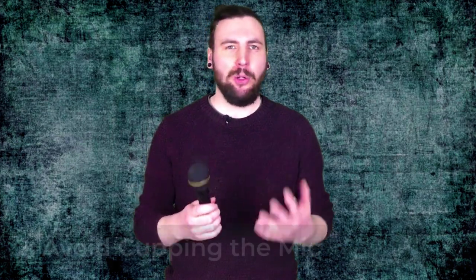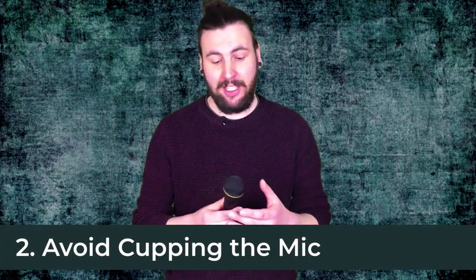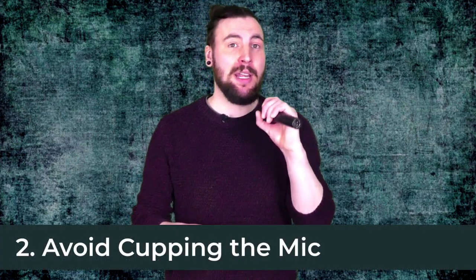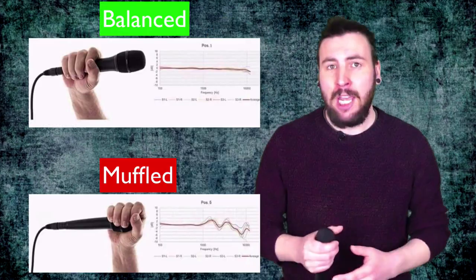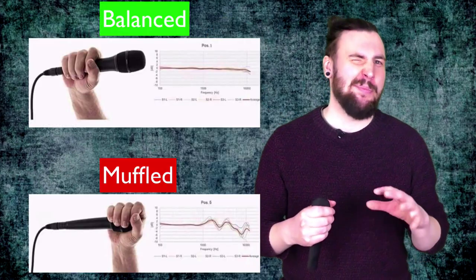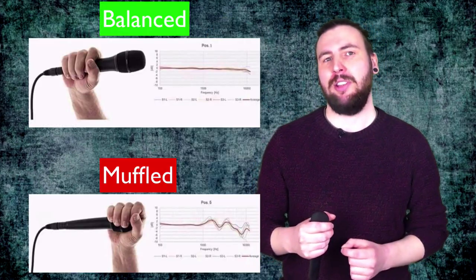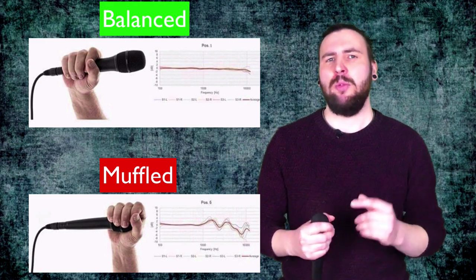Tip number two is on holding the microphone, and specifically to avoid cupping the microphone. When you cup the mic, you change the response pattern from cardioid — which only picks up at the front — to omnidirectional, which means it will be sensitive to all directions. This causes the microphone to pick up sound from everything else on stage, putting you at a greater risk for feedback. It will also make the vocalist sound muffled as the frequency response of the microphone changes and becomes more limited.